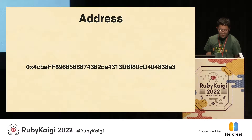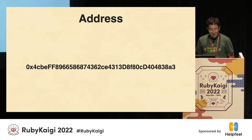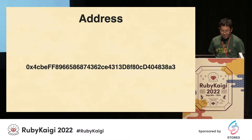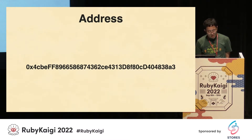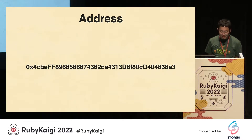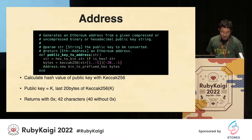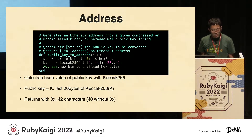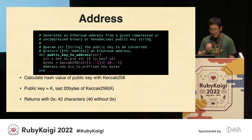So, this is an Ethereum address. The address looks like this, starting with 0x and 42 characters long. It is a hash value derived from the public key. The public key is passed through the Keccak-256 function. Take the last 20 bytes, that is 40 characters, and prefix it with 0x.